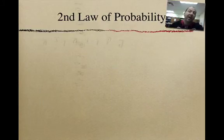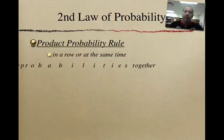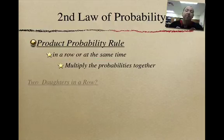Well, building upon that is the second law of probability, and it is the product probability rule. And the key terms here that we want to focus on are in a row or at the same time. Whenever you're looking at a probability problem and it says in a row or at the same time, we're going to have to use this product rule. And what that means is that we're going to have to multiply the individual probabilities together.